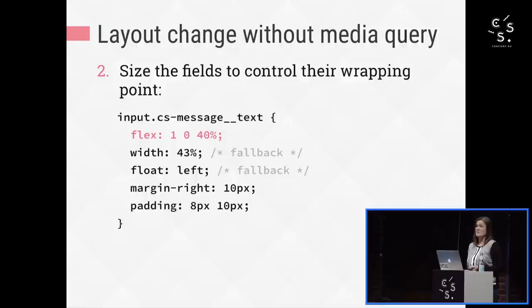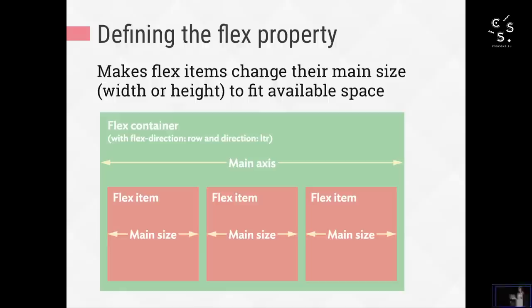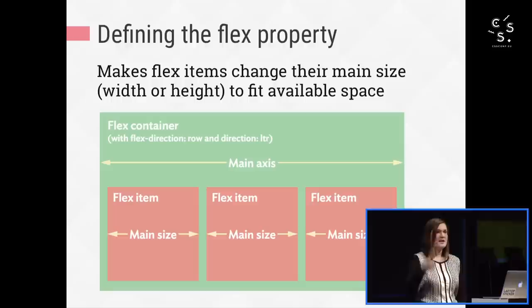So the question is: what makes them decide to wrap? The browser wraps them when it can't fit them on one line, but how does it know they can't fit at a certain point? This is where their flex values come in. The flex property is set on flex items to assign them a proportional size. It affects either their width or their height — whichever is the main size — along the main axis. The main axis is set by flex-direction. If flex-direction is row, the main axis is horizontal and width is the main size. If flex-direction is column, the main axis is vertical and height is the main size.